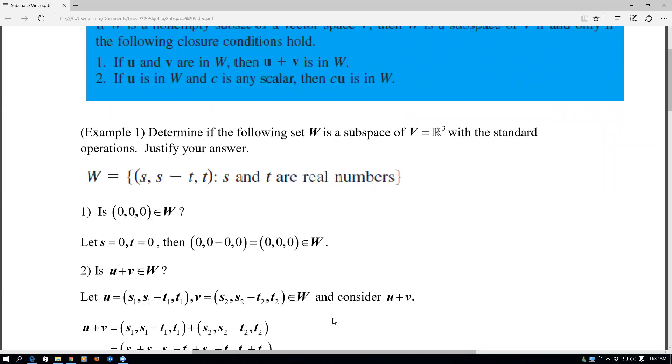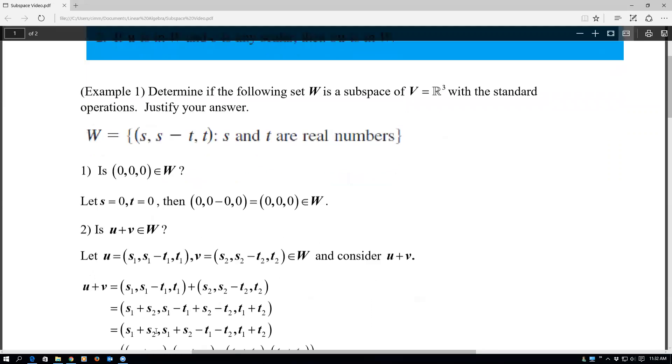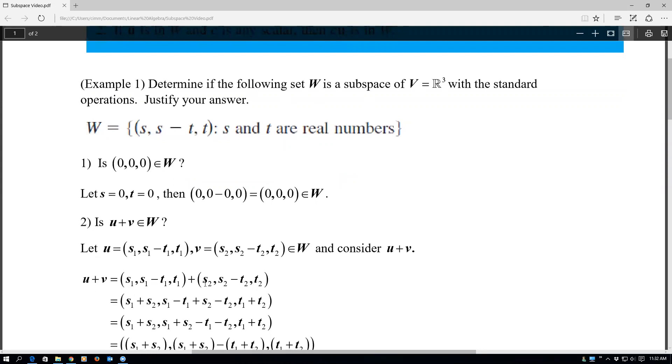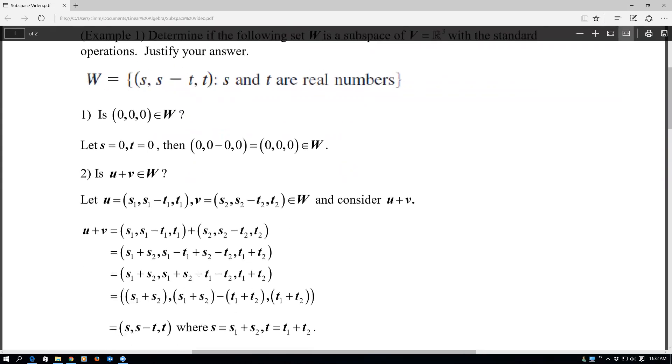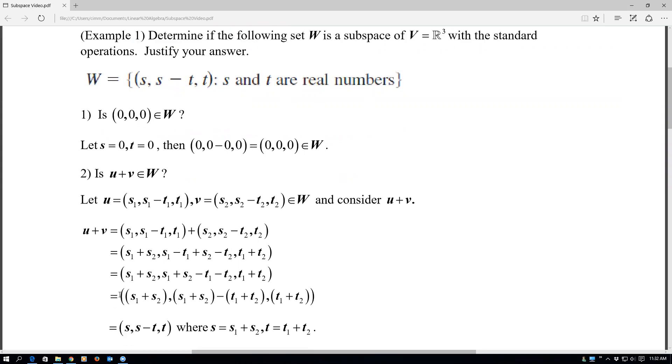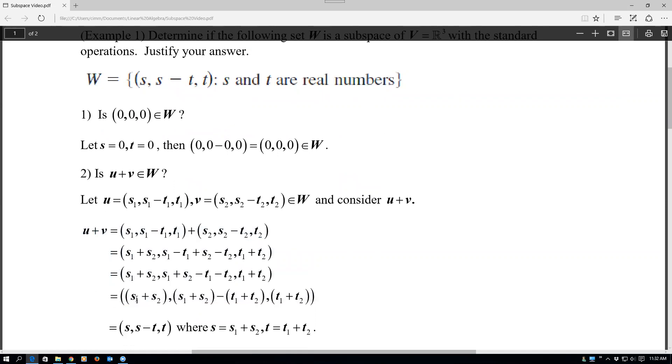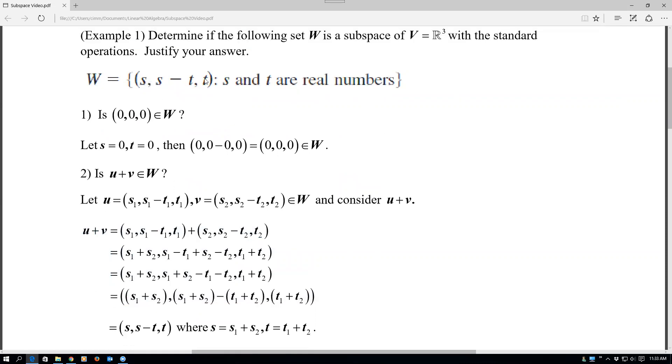So I have the sum set up here, U plus V. Of course, we combine those together by adding them element-wise. And then to show that it looks like something up here that we started with, what we can do is we can combine the S's together and the T's together, and then I strategically factor out that negative. So when I get down to this point right here,